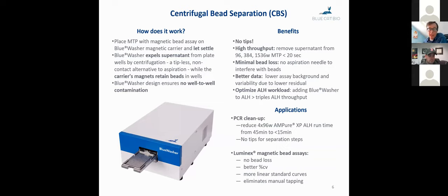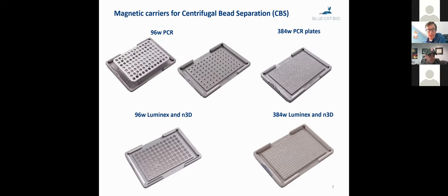And the application that I want to focus on here for the next couple of slides is Ampure magnetic bead cleanups of the kind that are used for NGS library prep. So, these are the magnetic carriers that we offer with the blue washer. We design different types depending on the plate that you use for your assay. So for instance, if you use an Eppendorf-compatible 384-well PCR plate, you would use this carrier. If you use a 96-well plate, you would use this carrier. For Luminex and N3D-type assays, you would use carriers for slightly taller plates, as shown down here.